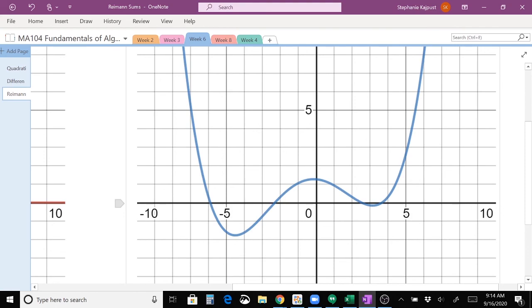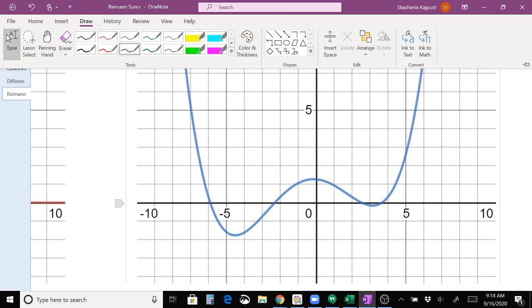So the way the left sum works is you pick how wide you want your rectangles to be. And so let's just pick a width of 1 because that's what we have our grid for. And then you draw rectangles from the left to the right. So I'm going to draw these in and I can get this. Let's do this in blue.